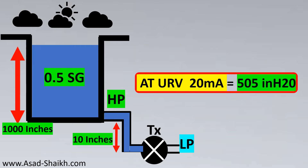You'll notice that 505 inches of H2O compensates for the 10-inch transmitter offset below the tapping. Even though the tank liquid alone gives 500 inches of H2O, the transmitter must show 505 inches of H2O to correctly account for its location.